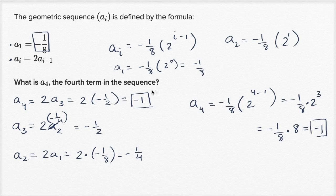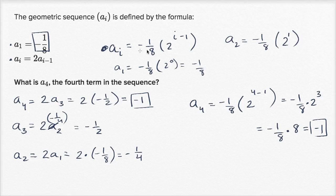You might be a little torn on which method to use, but this second method — where we come up with an explicit formula once we know the initial term and the common ratio — would be way easier if you were trying to find, say, the 40th term. Doing the 40th term recursively would take a lot of time and frankly a lot of paper.